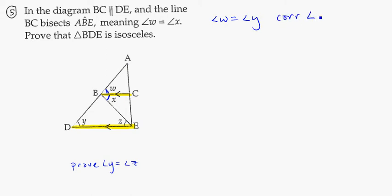corresponding angles on parallel lines equal. And then I can say because angle X is equal to angle W, it's also equal to angle Y, because I know those are already equal.